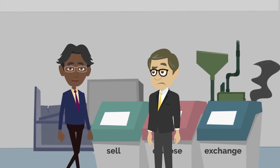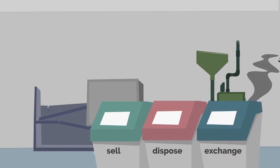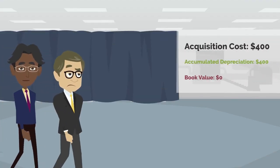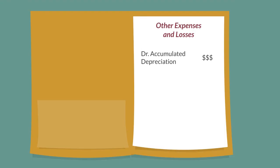A company can also retire an asset by not using it. If the asset's accumulated depreciation equals its acquisition cost at the moment of disposal, the asset is considered fully depreciated and has zero book value.